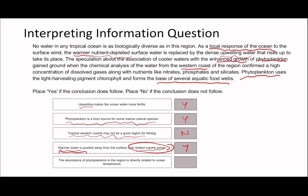Lastly: 'The abundance of phytoplankton in the region is directly related to temperature.' We've got quite a definitive word here — 'directly related.' The text says: 'The speculation about the association of cooler waters with the enhanced growth of phytoplankton gained ground when chemical analysis confirmed a high concentration of dissolved gases along with nutrients like nitrates, phosphates and silicates.' So this is a speculation — we can't say for sure, and because it says 'directly,' we can't conclude that for certain. If it said 'maybe related,' then you could put true, because it's true that it could be true. But because it says 'directly,' the answer is no.